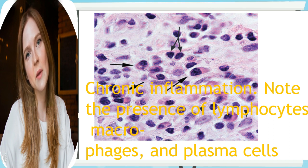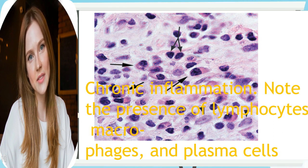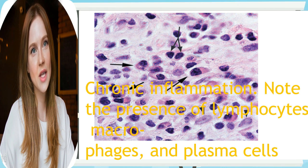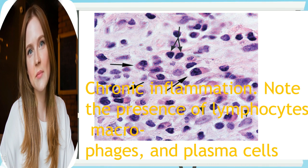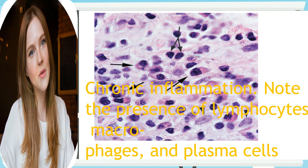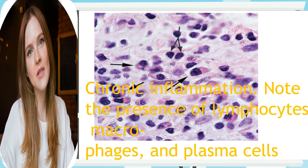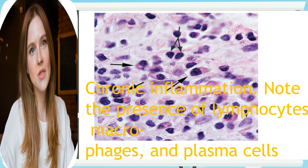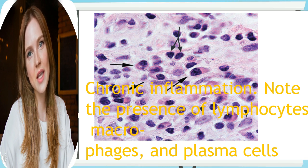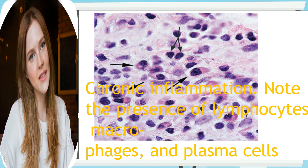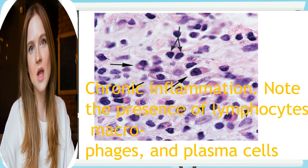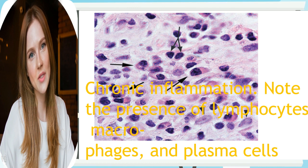without a preceding acute inflammatory reaction. It occurs in two major patterns: chronic non-specific inflammation and granulomatous inflammation. A cellular reaction with a preponderance of mononuclear, round cells — macrophages, lymphocytes, and plasma cells — often with a proliferation of fibroblasts and new vessels. Scarring and distortion of tissue architecture is characteristic.